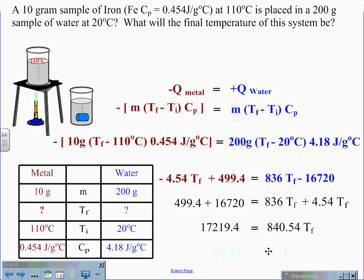Dividing by 840.54 on both sides to isolate TF, we get a final temperature of the equilibrium to be 20.49 degrees Celsius.